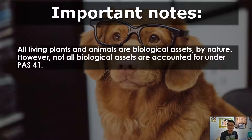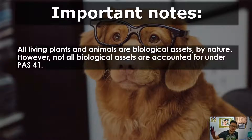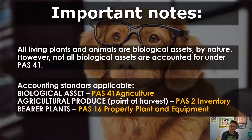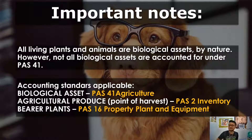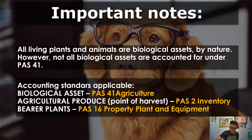Important notes: all living plants and animals are biological assets by nature — including bearer plants, they are biological assets by nature. However, not all biological assets are accounted for under PAS 41 because different accounting standards apply to biological assets, agricultural produce at the point of harvest, and bearer plants. Let's talk about agricultural produce at the point of harvest.